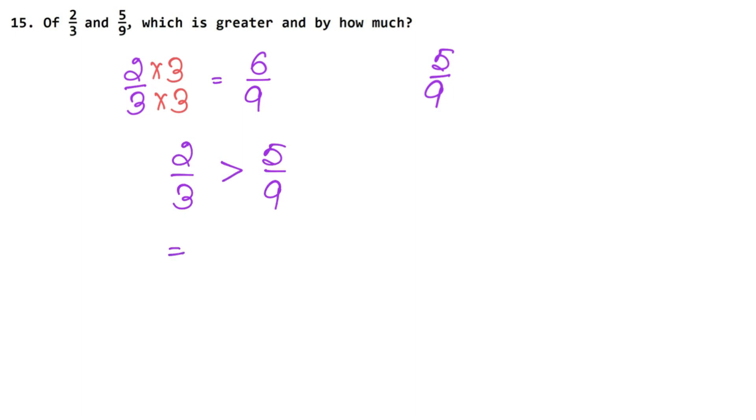You can minus this from this or this value from this. How can it be minus? 2 upon 3 minus 5 upon 9. How much will our LCM be? Because 3 and 9, we have to find LCM. 3 times 3 is 9, so LCM is 9. So 9 is the denominator.